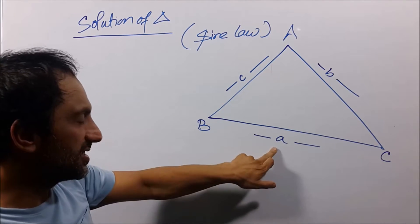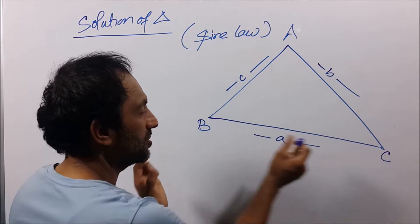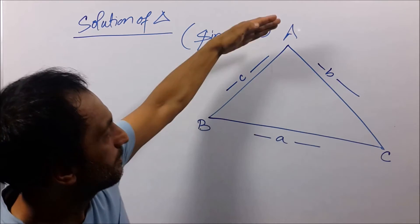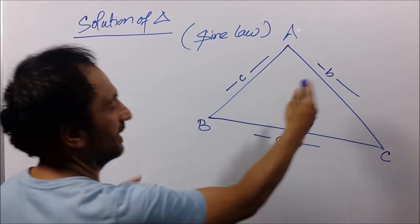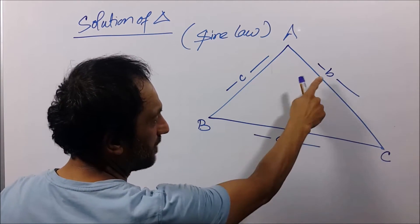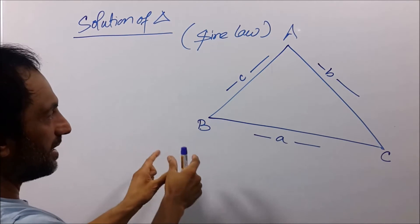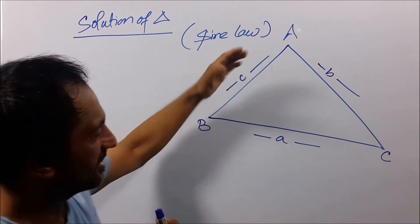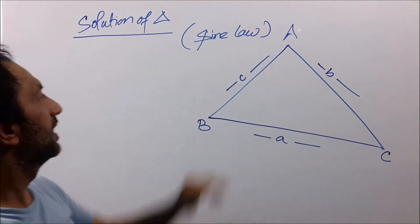Like this is side A which is BC, so this is small a and it is opposite to angle A. Similarly, the side CA which is small b is opposite to angle B, and the same way this small c is opposite to angle C.